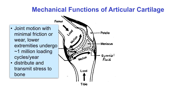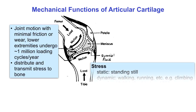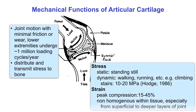We will focus on articular cartilage, which is found in articulating joints such as the knee. Articular cartilage permits joint motion with minimal friction and wear, which is important since the lower extremities undergo about a million loading cycles per year. The articular joints also distribute and transmit stresses to the bone. Joint stresses can be static, such as when standing still, or dynamic, such as when walking or running.